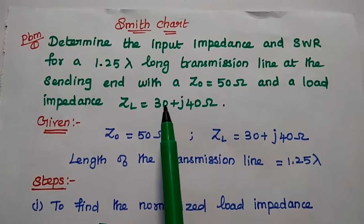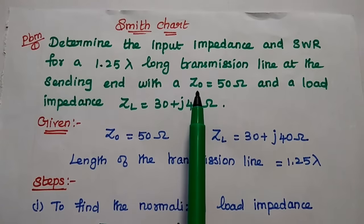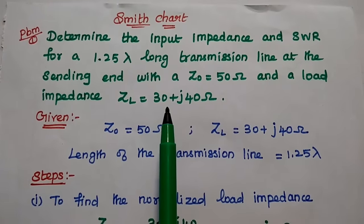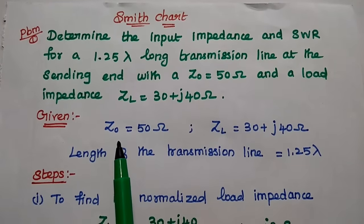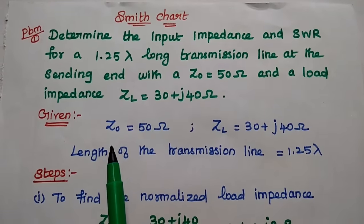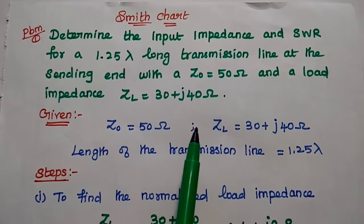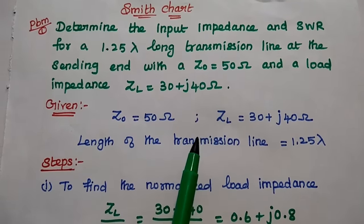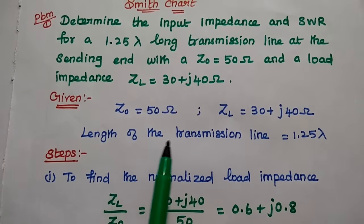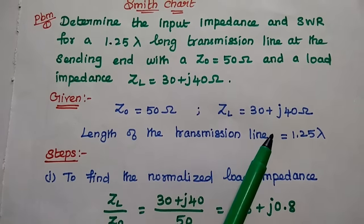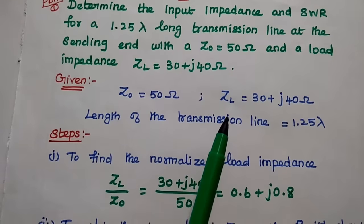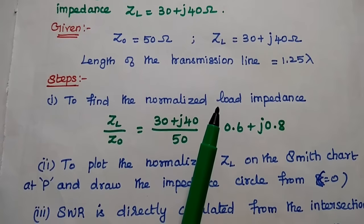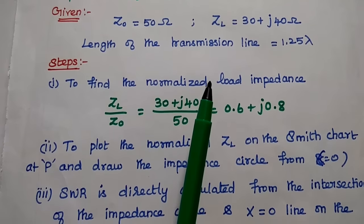Here we are going to find out the input impedance and the standing wave ratio for a given transmission line. First we have to write the given data: Z0, the characteristics impedance, is equal to 50 ohm; the load impedance ZL is equal to 30 plus J40 ohm; and the length of the transmission line is 1.25 lambda. Next we are going to start the procedure to find out the input impedance and SWR using Smith chart.